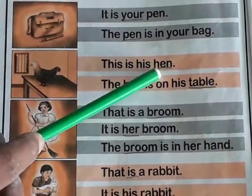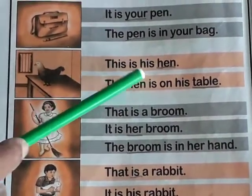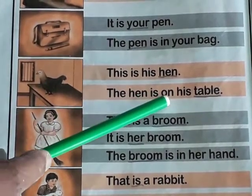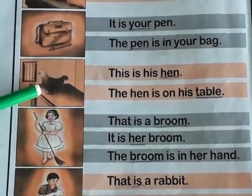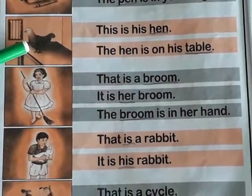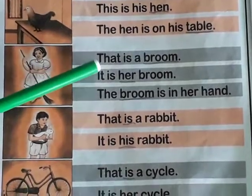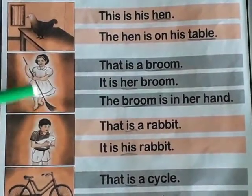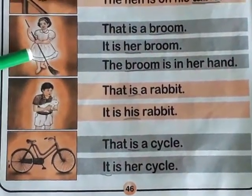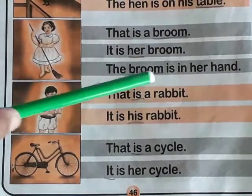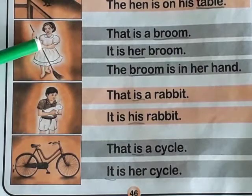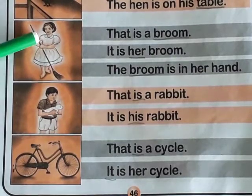This is his hand. This is the picture of a hand. The hand is on his table. The hand is on his table.